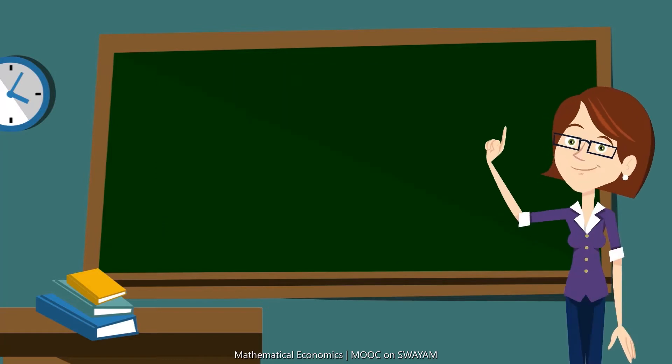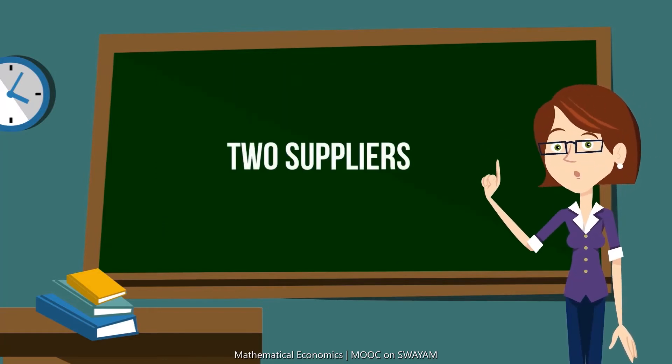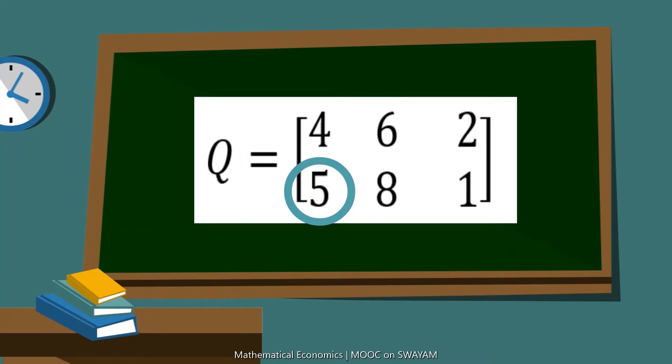Suppose that the company can buy these inputs from two suppliers whose prices for the three inputs are given by matrix Q. The rows of this matrix show the suppliers and the columns are the three inputs. Number 5 is the price of first input by the second supplier. Similarly, you can interpret the other numbers.